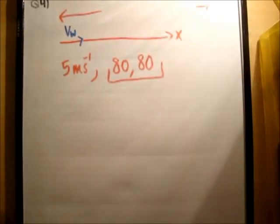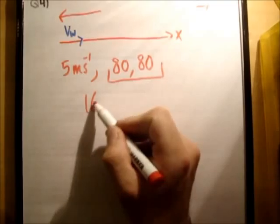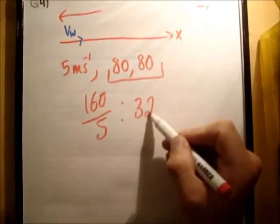However, because there's no current, it doesn't matter about the... So you can just add the distance. So you get 160 over 5. He does it in 32 seconds.